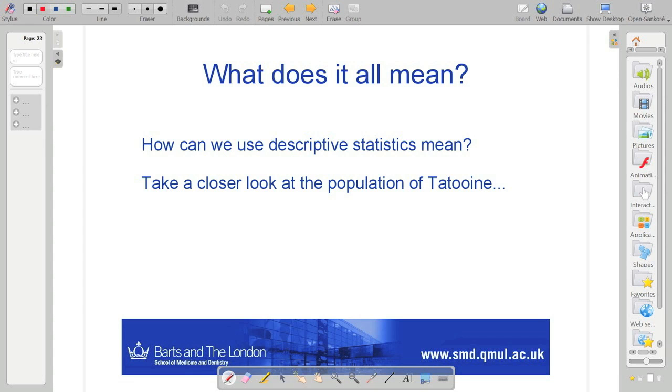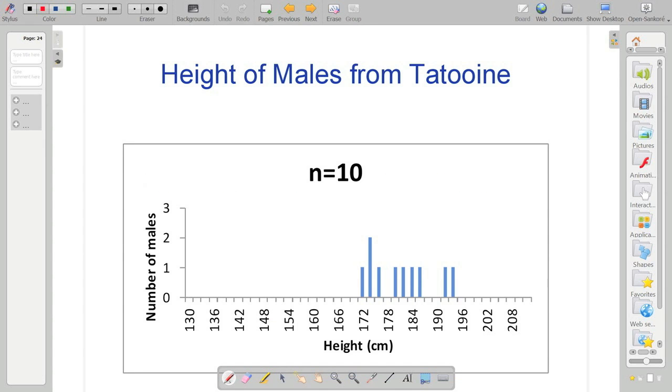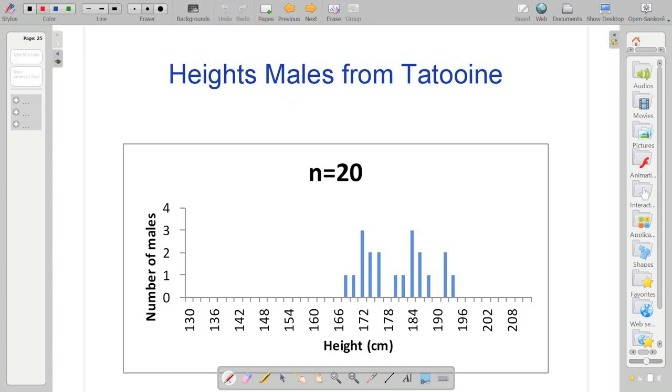So, for example, let's just say, well, we started with 10. This is just the height of people or inhabitants from Tatooine. So we've got n equals 10, and you get this rather lumpy-looking distribution with one or two, maybe three in each bin. So these are just called bins. When I talk about a bin, it's a range. If we increase our sample size and maybe did a bit of randomization, we can improve the look of that distribution.